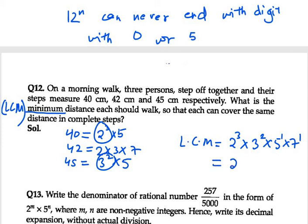When you solve this you will get 2520cm. So the minimum distance that each should walk is 2520cm.